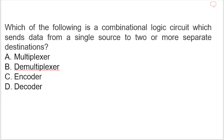Next question: which of the following is a combinational logic circuit that sends data from a single source to one or more separate destinations? Options are multiplexer, demultiplexer, encoder, decoder. The correct option is B, demultiplexer, also called demux.